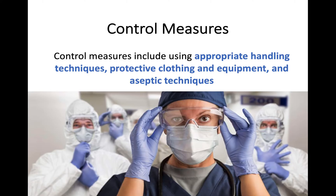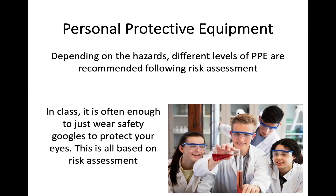There are various control measures you can use. These may involve appropriately handling substances through various techniques, using protective clothing or personal protective equipment (PPE), or using aseptic techniques to avoid contamination. All of these control measures come from the risk assessment you carry out to minimize the likelihood of harm from a given hazard. The hazards you identify in a given experiment will dictate what level of PPE you use.